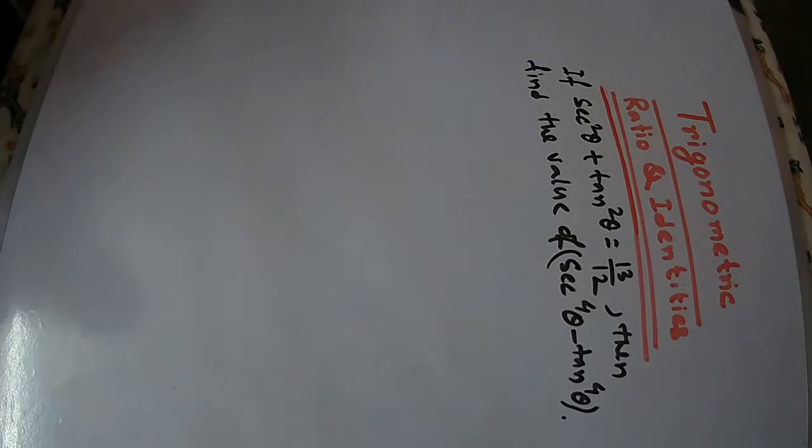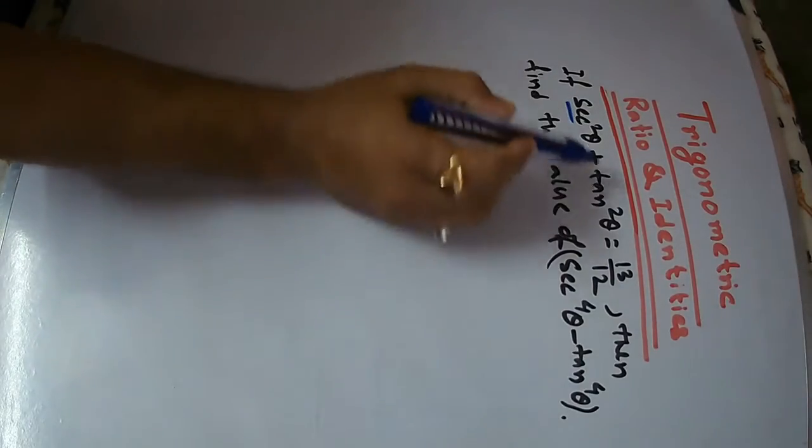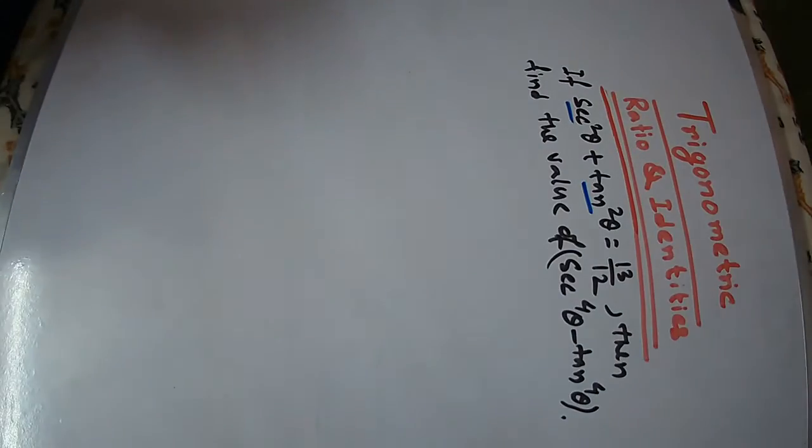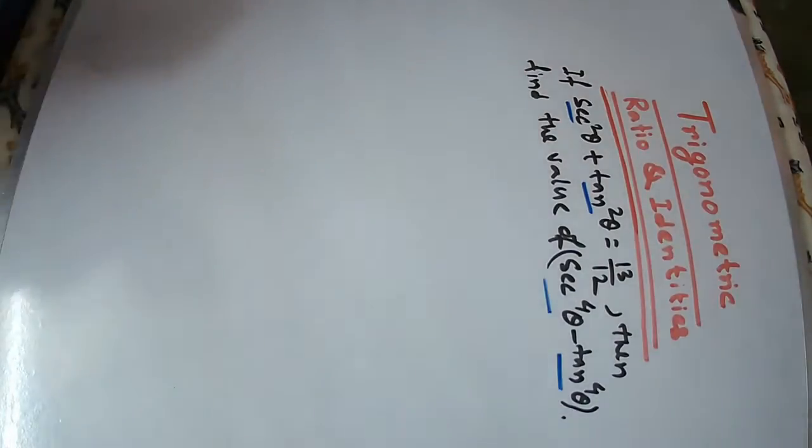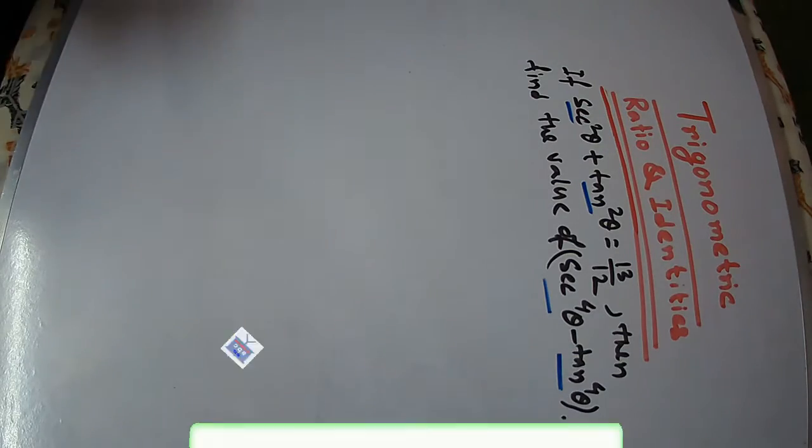Today, I am going to show you the trigonometric ratio identity. If 6 square theta plus 10 square theta is equal to 13 by 12, then find the value of 6 square theta minus 10 square theta.